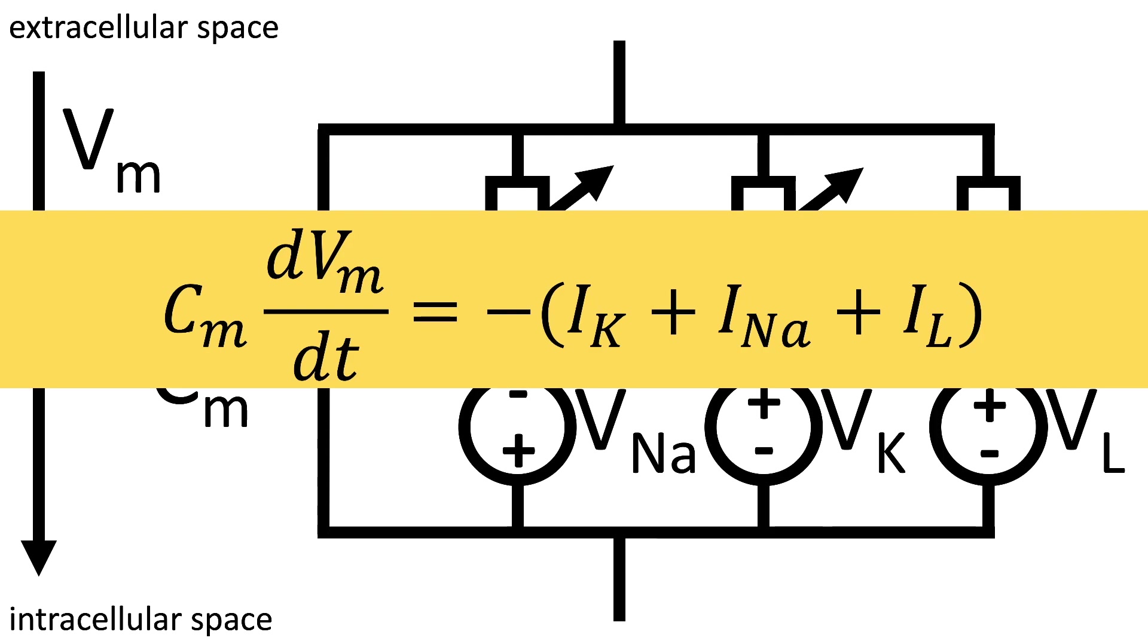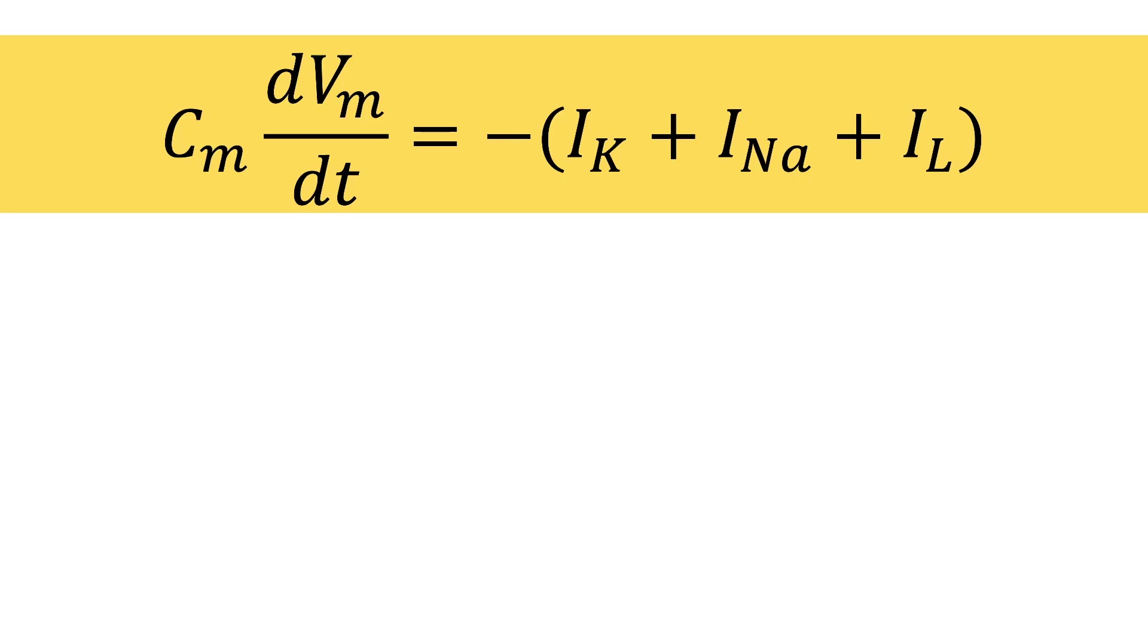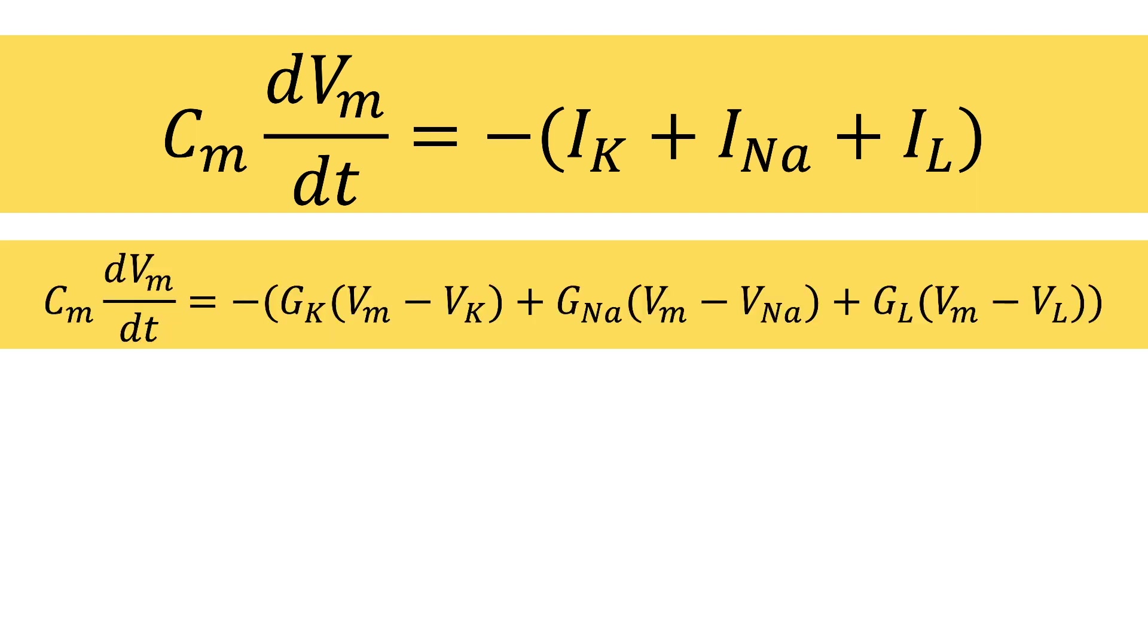However, we are interested in the transmembrane voltage. So using Ohm's law we can reformulate the currents, and instead of currents we use their conductance multiplied with the deviation from the steady state, which is given by the Nernst potential of each channel respectively.